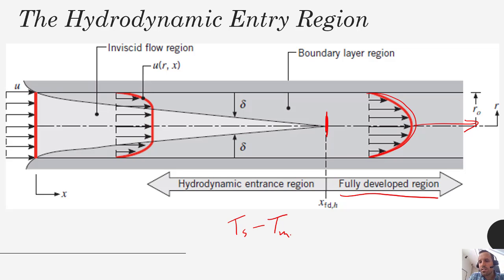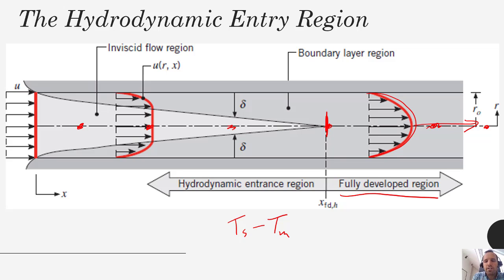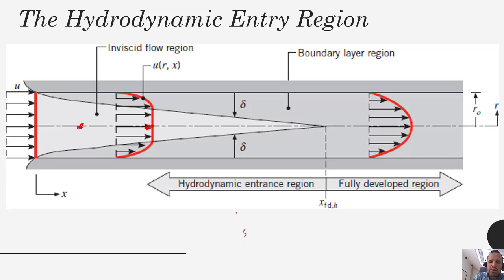In a heated system, T_mean is going to increase — it will be different at different axial positions along the pipe. You actually have the ability to impact the overall fluid temperature because the flow is bounded. This is why we represent that temperature as T_mean rather than T_infinity, which is the bulk fluid temperature.